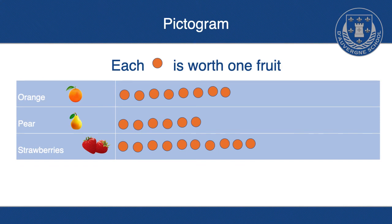Because I've started in the same place, it's really clear without having to count that there are fewer pears than strawberries and fewer pears than oranges in the basket. That shows us we can use a pictogram.